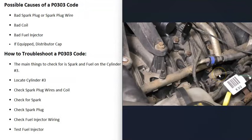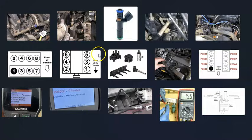Also keep in mind that the wiring going to the fuel injector — if there are any problems with it, like an open, a short, or a bad connection — that's going to cause the same symptoms as a bad fuel injector. So be sure to check both the fuel injector and the fuel injector wiring. That's basically a general overview of how you go about fixing a vehicle with a P0303 code.